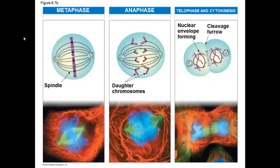Also in metaphase, the spindle is fully formed. Moving to anaphase — this is the step where the duplicated chromosomes are ripped apart by the microtubules, and the sister chromatids are essentially separated. Then the microtubules in the middle of the cell elongate, pushing the centrosomes further apart, and this is part of what allows the cell to divide into two. If you watch the videos, this is one of the most amazing parts to see — it happens so quickly where these threads pull the chromosomes apart.